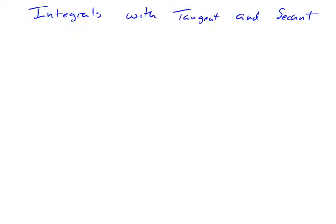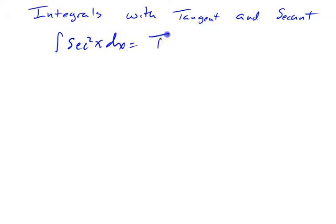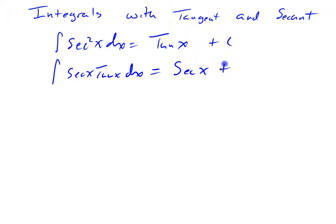In this video, I want to take a look at integrals related to tangents and secants. The basic ones, of course, would just be from Calc 1, where you took derivatives. The derivative of the tangent is the secant squared, so the integral of secant squared of x is just tangent of x. Likewise, the derivative of secant is secant x times tangent of x, so integrating that gives back secant x. Of course, there should be a plus C with each of these.